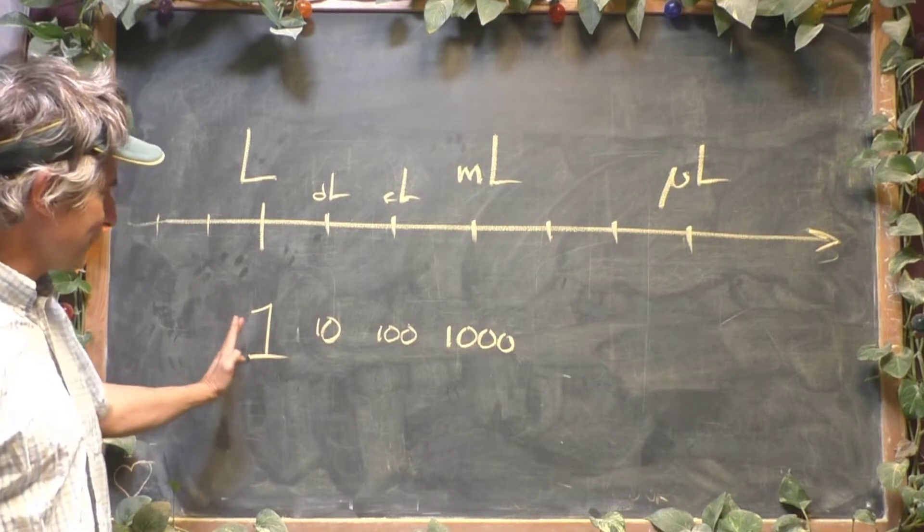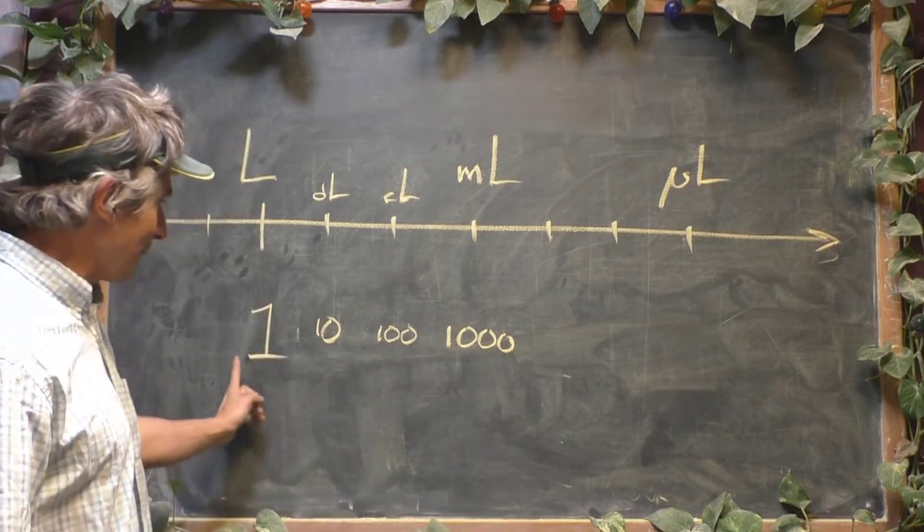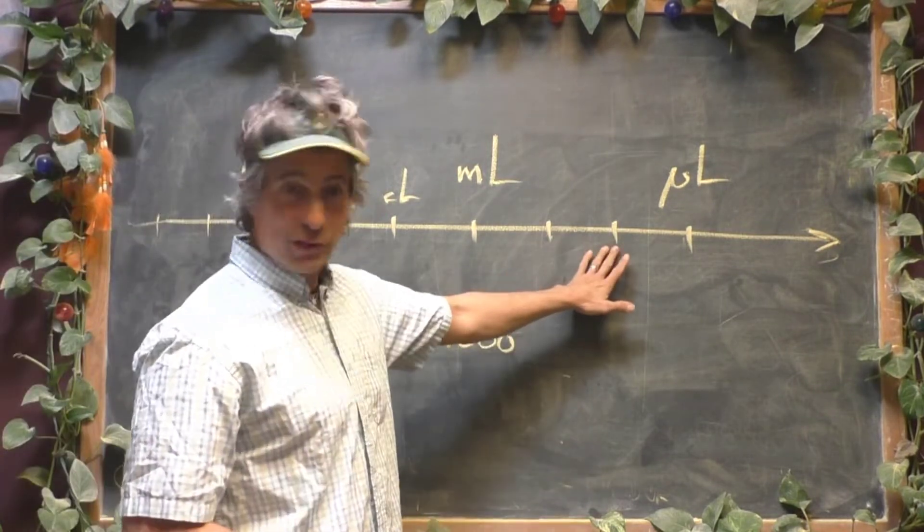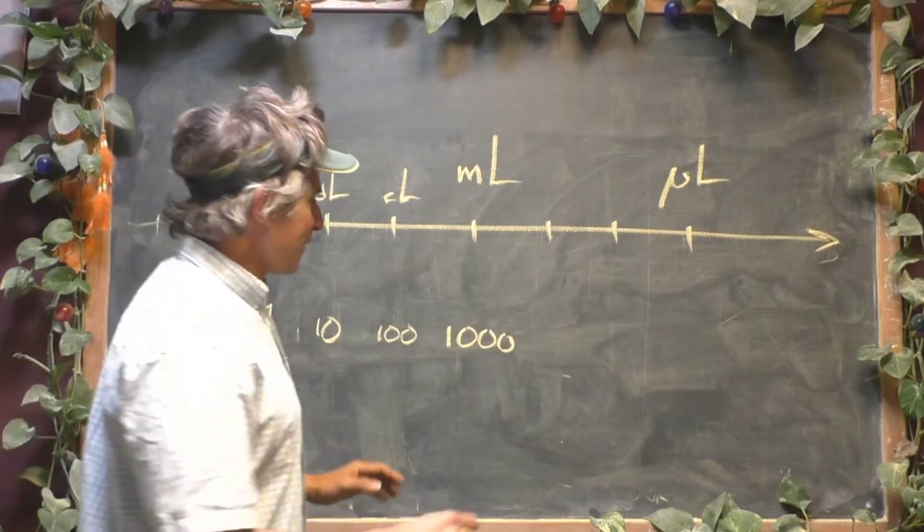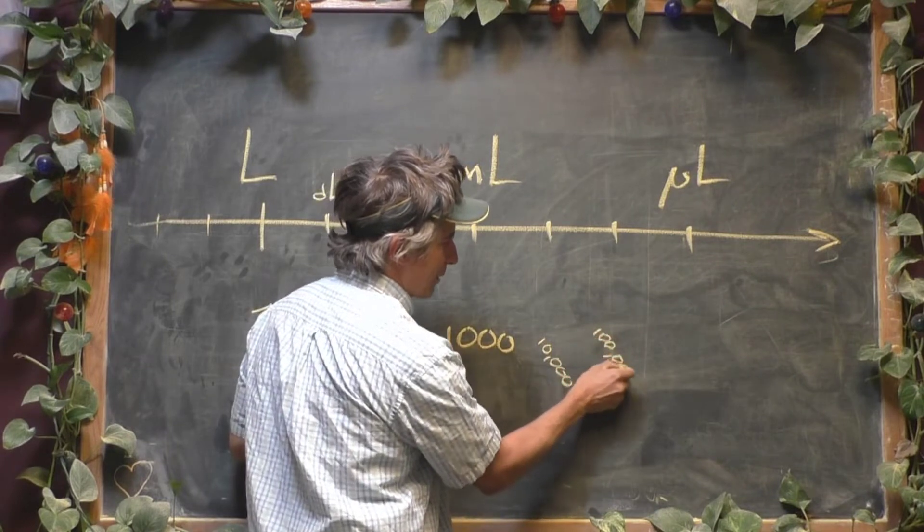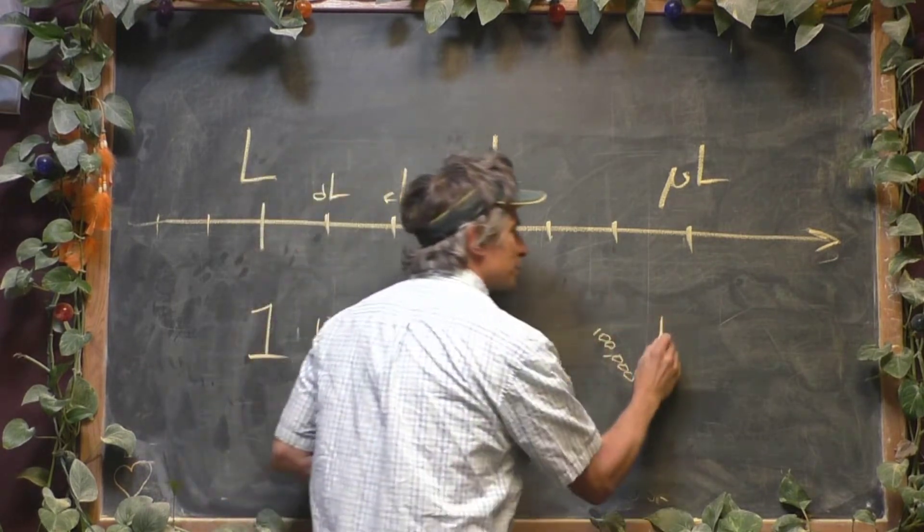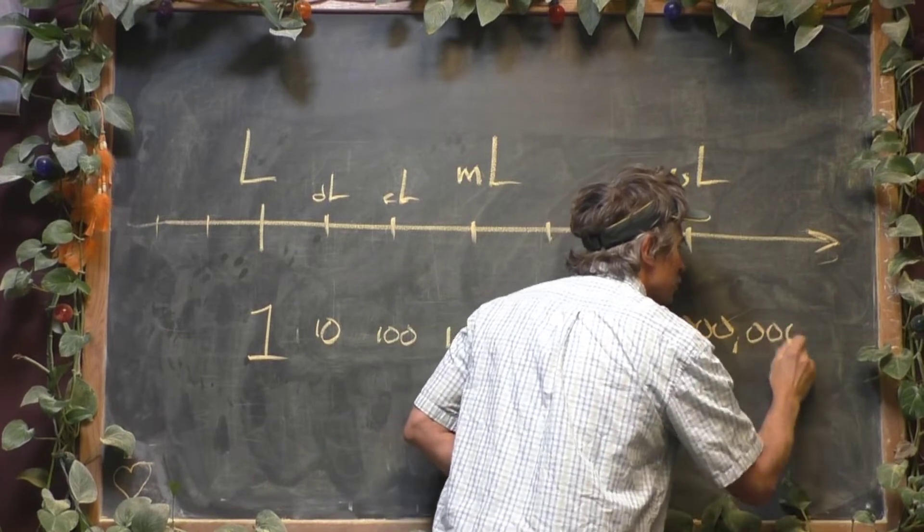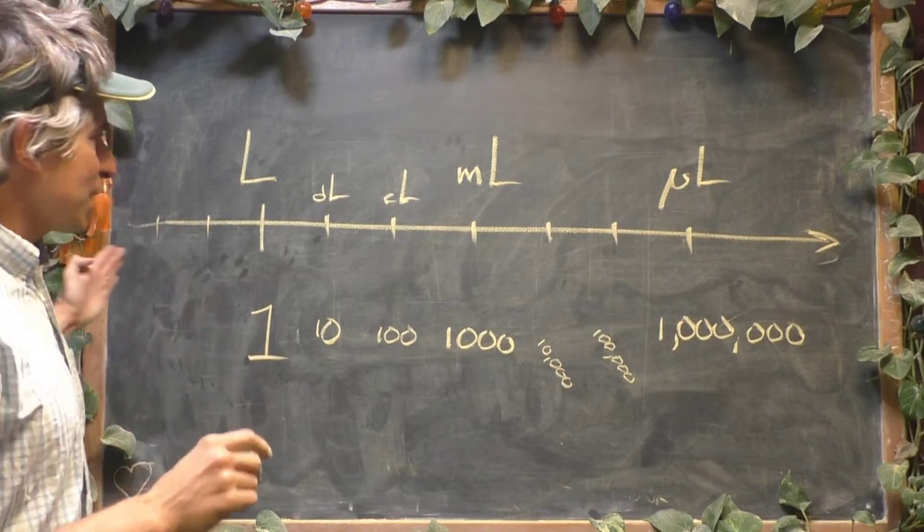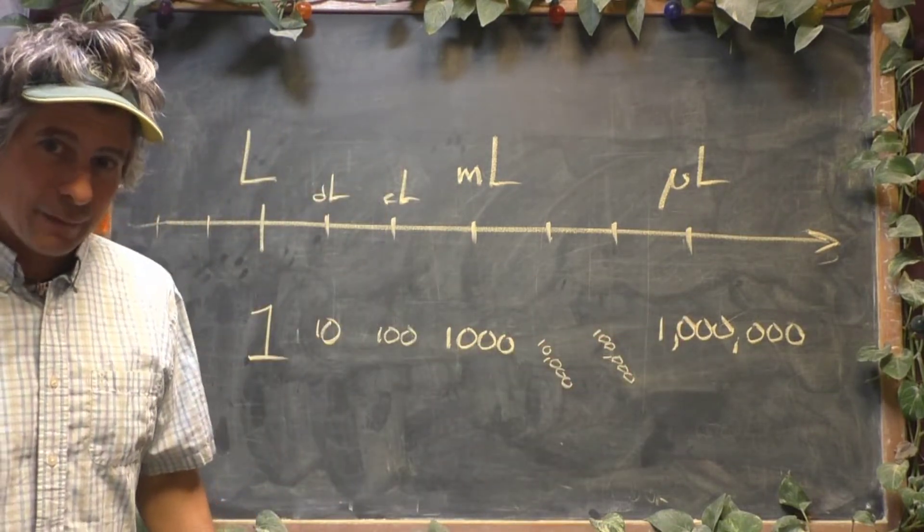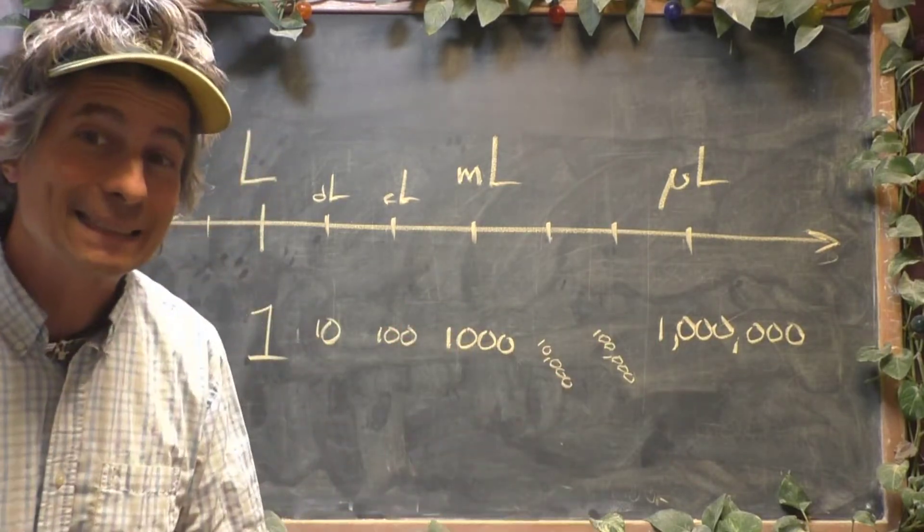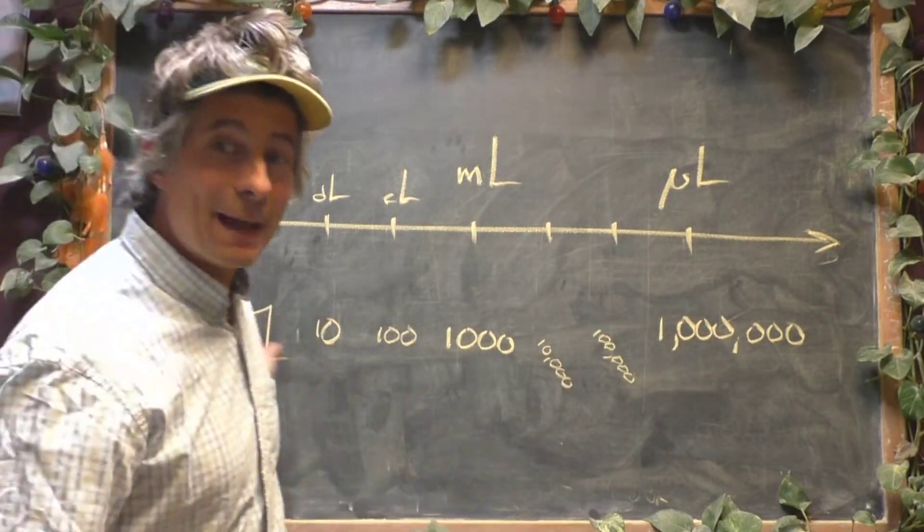So notice as you move from left to right, you're adding zeros. Each stop adds another zero. You can keep going. I'm not even going to pretend to know what these two are called. But it doesn't matter. If you were to stop at them, you'd add another zero there to get 10,000. And then you'd add another zero here to hit 100,000. And you'd add another zero at microliters to get to a million. So if you're moving from left to right on this number line, you simply keep adding a zero with every move to the right. Why adding a zero? Because you're multiplying by 10 going that way.